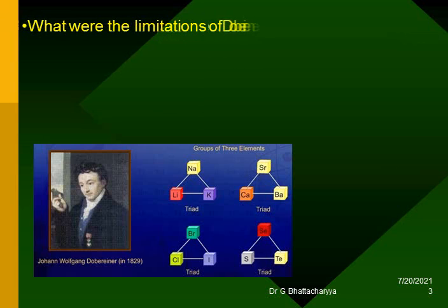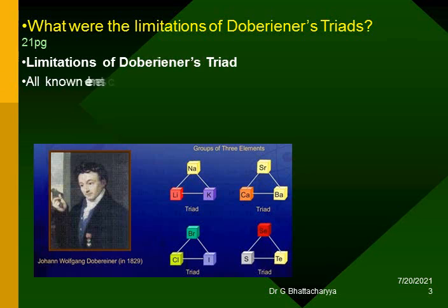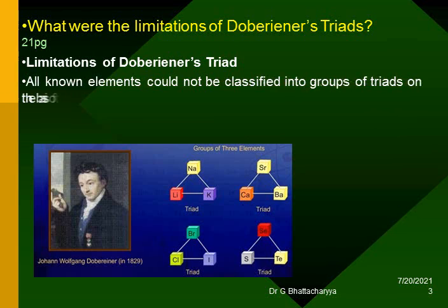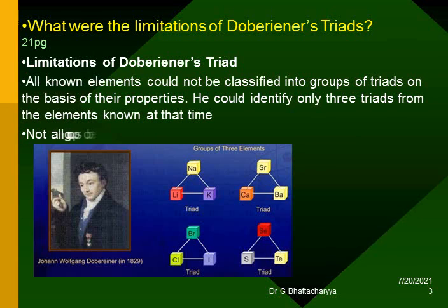What were the limitations of Dobereiner's triads? Limitations of Dobereiner's triad: All known elements could not be classified into groups of triads on the basis of their properties. He could identify only three triads from the elements known at that time. Not all groups obeyed the law of triads.